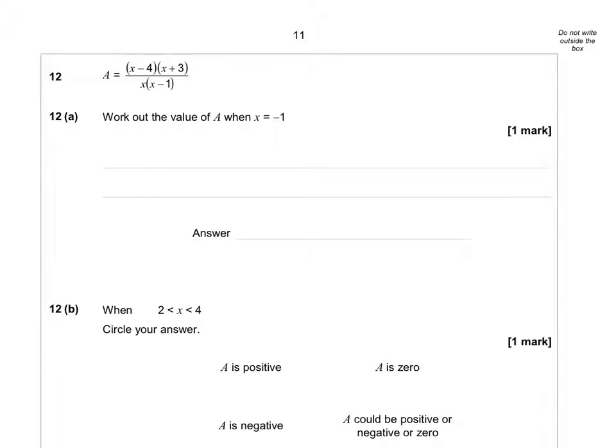Here we have a formula to use, and we have to work out the value of A when x is -1. What I'm going to do is work out each bracket. Firstly, I'm going to do -1 minus 4, substituting x for -1. Now -1 minus 4 is -5. Second bracket, I have to do -1 add 3. That's -2. And then underneath, I need to work out -1 minus 1, which gives me -2. So I've worked out what all the brackets are worth.